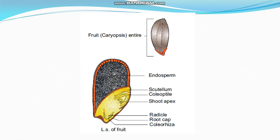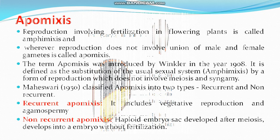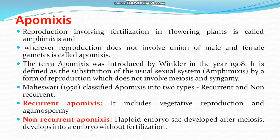This is the structure of the monocot seed, with paddy as the example. Apomixis: reproduction involving fertilization in flowering plants is called amphimixis — involving both male and female gametes. Wherever reproduction does not involve the union of male and female gametes, it is called apomixis. The term apomixis was introduced by Winkler in 1908. It is defined as a substitution of the usual sexual system (amphimixis) by a form of reproduction which does not involve meiosis and syngamy.